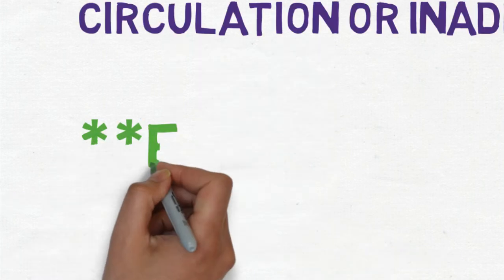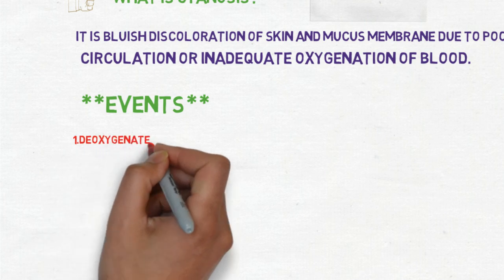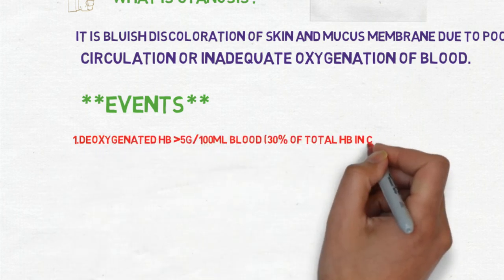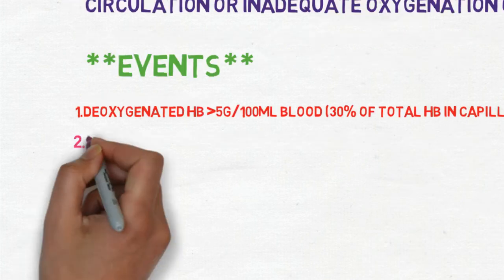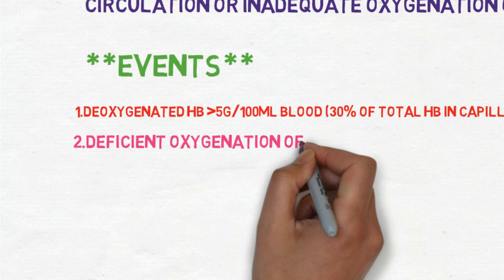Let's see what are the actual events that are occurring in our body during cyanosis. Number one: there is increased deoxygenated hemoglobin more than 5 grams per 100 ml of blood, that is 30% of total hemoglobin in capillaries.